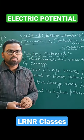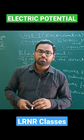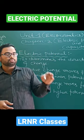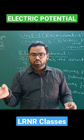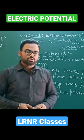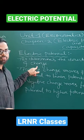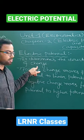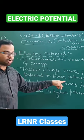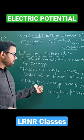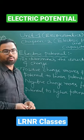What is electric potential? Potential determines the direction of charge — whether charge is flowing from higher potential to lower potential or lower potential to higher potential. It determines the direction of flow of charge. Positive charge moves from higher potential to lower potential, and negative charge moves from lower potential to higher potential.